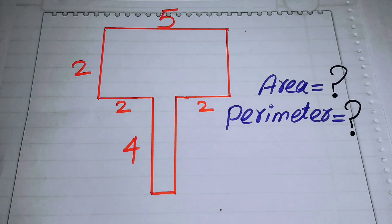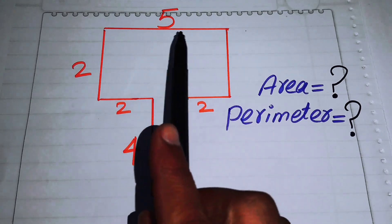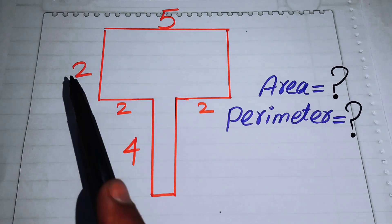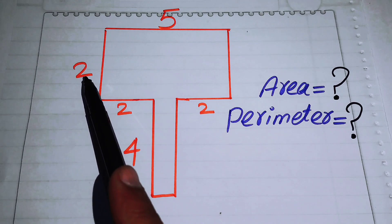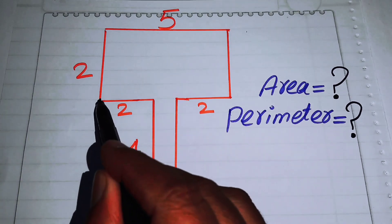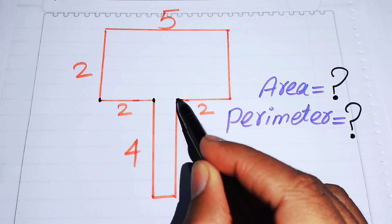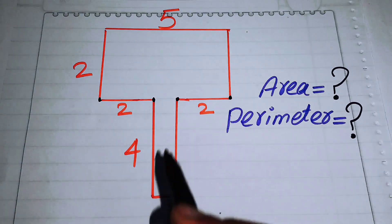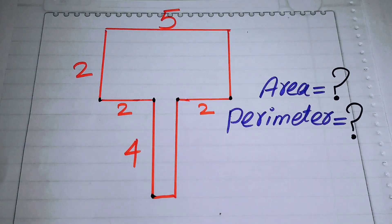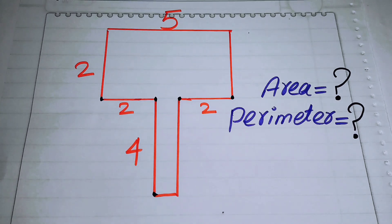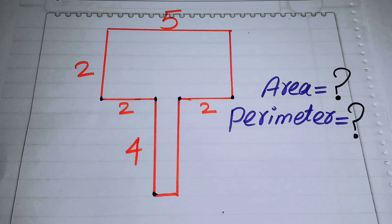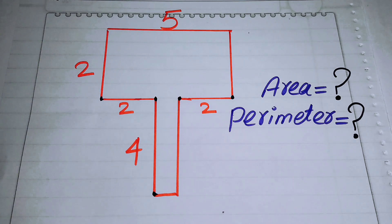The length of one side is 5, the length of this side is 2, this portion is 2, this portion is 2, and this portion is 4. Note that this shape is not drawn to scale, so please ignore any scaling errors.